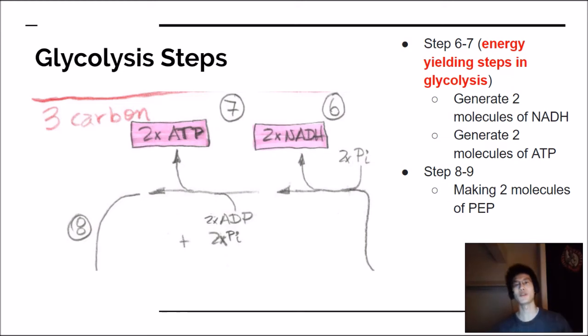From there we move to probably one of the more important steps of glycolysis, the energy yielding steps. At step 6, you actually create two NADH. Then at step 7, you make two ATP molecules. This is very interesting because ATP and NADH are energy that can be utilized in other reactions. So this is an energy yielding step and probably one of the more important steps in glycolysis.